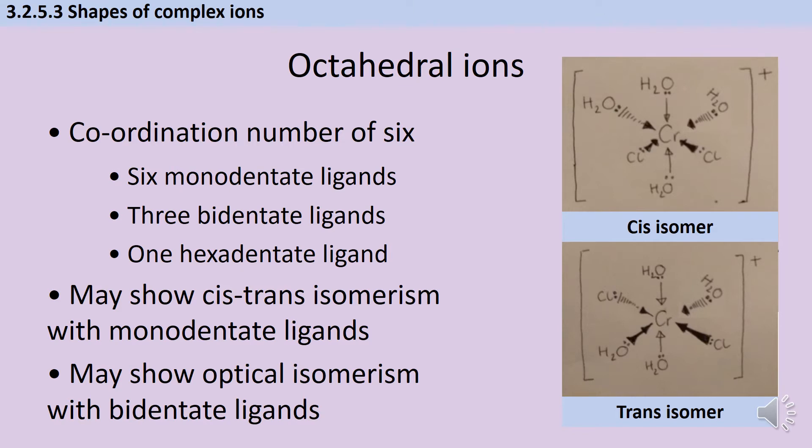Now, not all of those ligands have to be the same as each other. So it's possible to have six monodentate ligands bonded where some are of one form and some are of another. And we've already seen an example of this when we looked at the partial substitution of ammonia into hexa-aquo-ions.